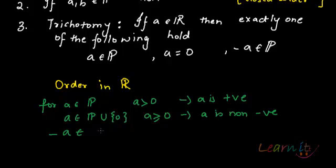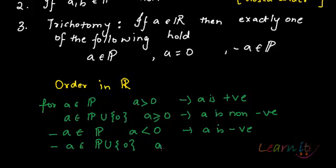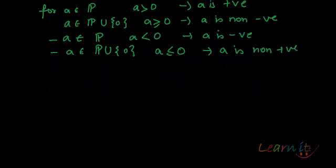...we write that a is less than zero; we say a is negative. And minus a belonging to P union zero, a is less than or equal to zero, and a is non-positive.